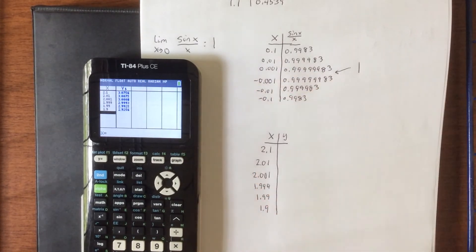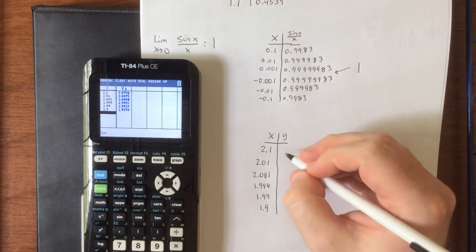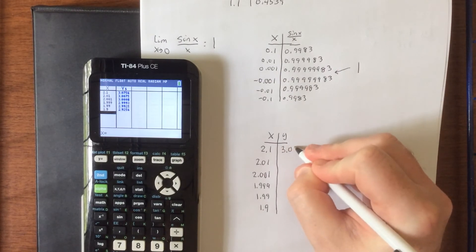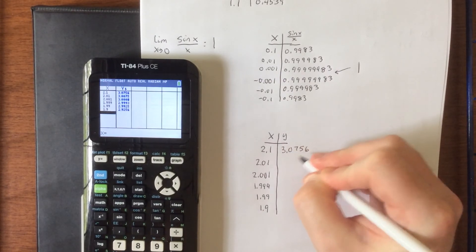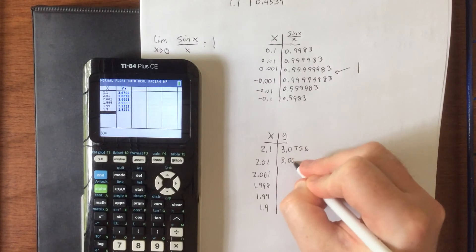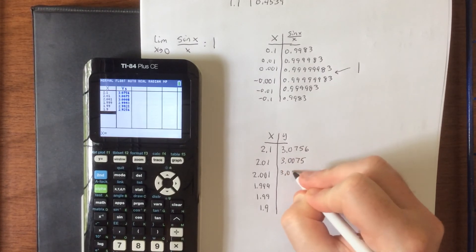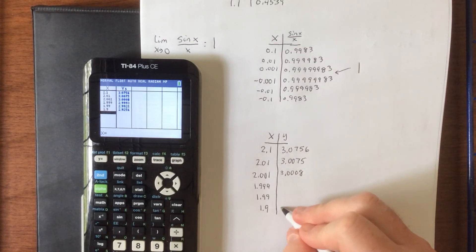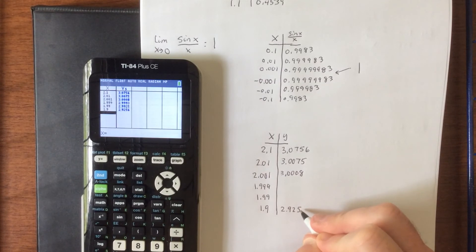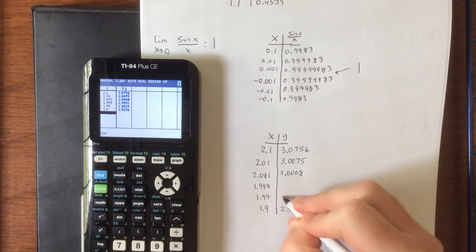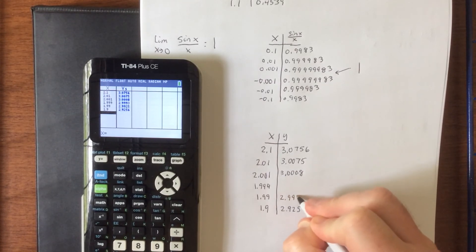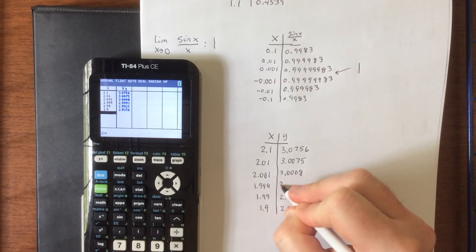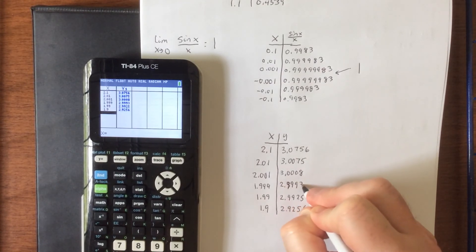Copying down what we get, accurate to the fourth decimal place into our table, that'll be 3.0756, 3.0075, 3.0008, and then coming in from the other direction, 2.9256, 2.9925, and 2.9993.